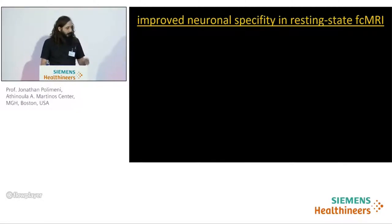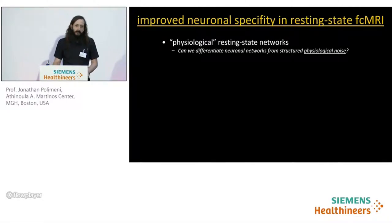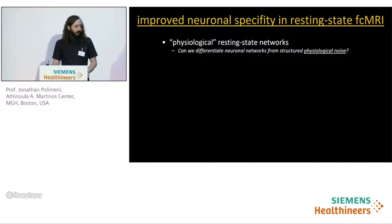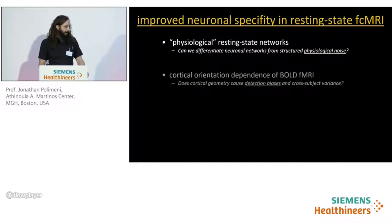In keeping with this theme today, I'd like to talk about improving neuronal specificity of fMRI in the context of resting state functional connectivity. In this presentation, I'll go through three recent studies. First, I'll show some work looking at physiological resting state networks, and ask the question: can we differentiate neuronal networks from structured physiological noise?